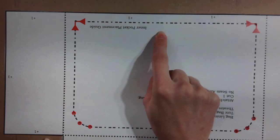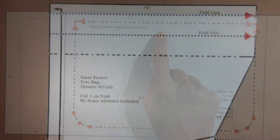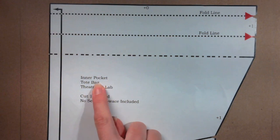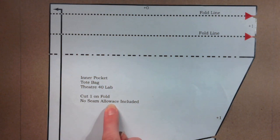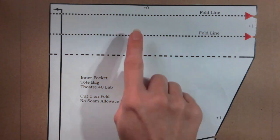There is similar information on the inner pocket pattern. The name, project name, and class. Note this piece is cut one on the fold and does not have seam allowance added. Some edges are plus one inch but the top edge is plus zero as the seam allowance has been included when the casing was patterned so no seam allowance will be added along the top edge.